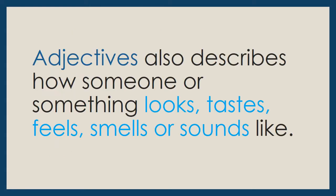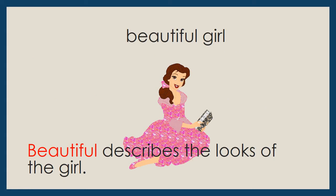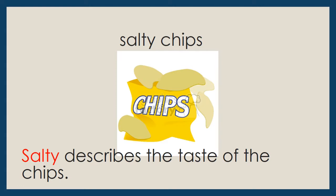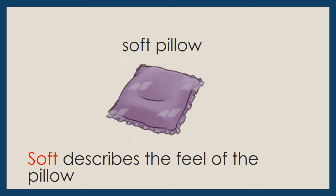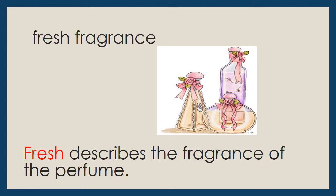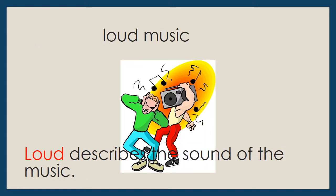Adjectives also describe how someone or something looks, tastes, feels, smells or sounds like. For example: Beautiful girl — beautiful describes the looks of the girl. Salty chips — salty describes the taste of the chips. Soft pillow — soft describes the feel of the pillow. Fresh fragrance — fresh describes the fragrance of the perfume. Loud music — loud describes the sound of the music.